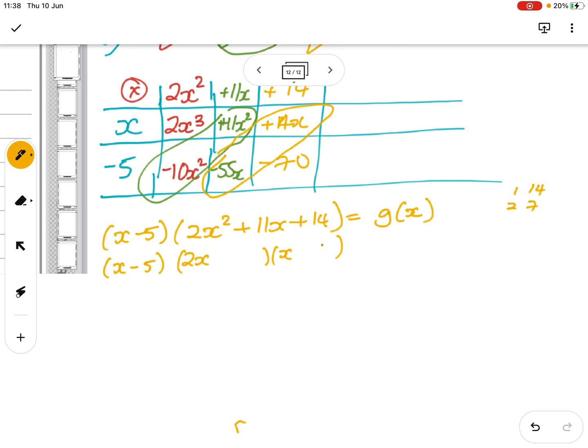So that's going to have to be 2x + 7. This is 2, this is 7. They're both pluses, and that would equal g(x). So I've fully factorised. Nice.